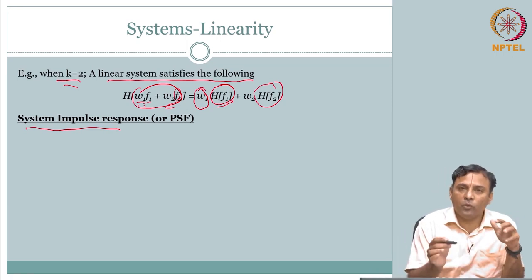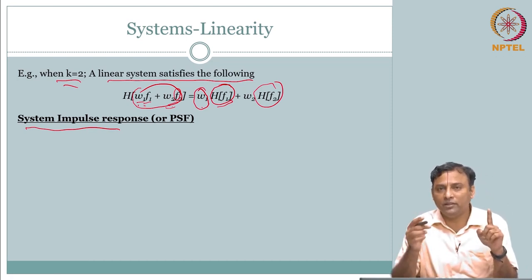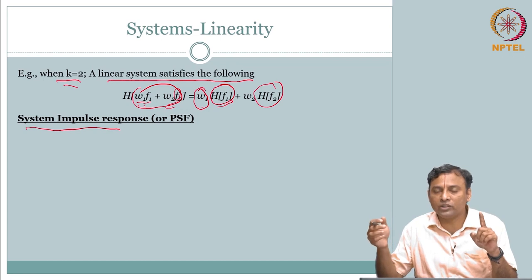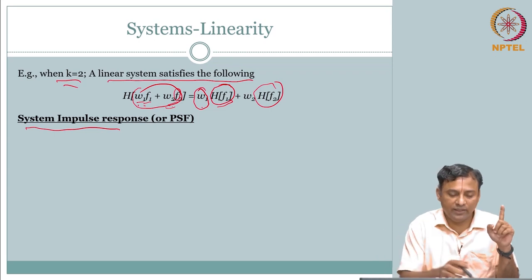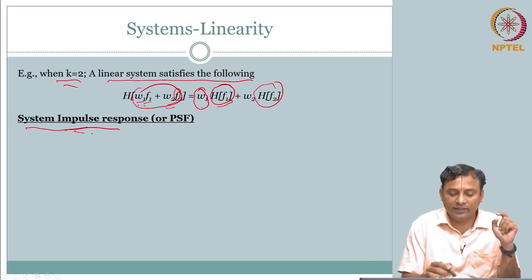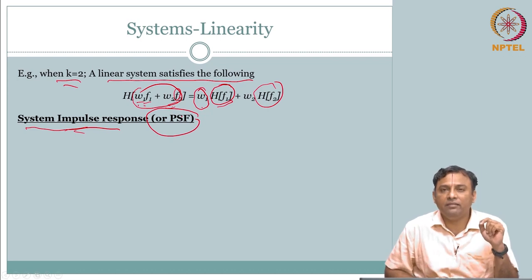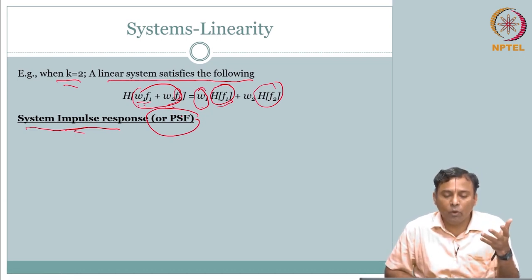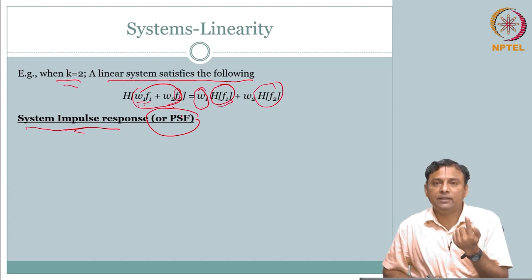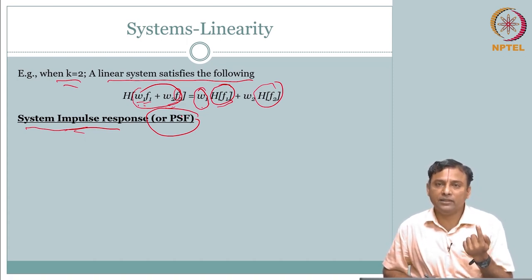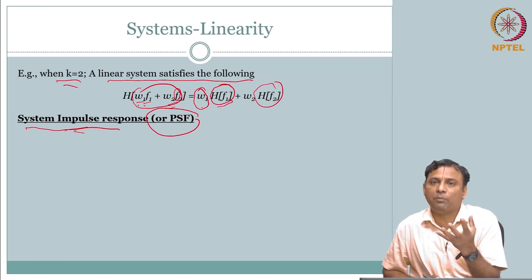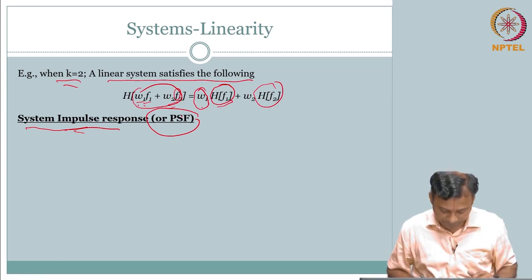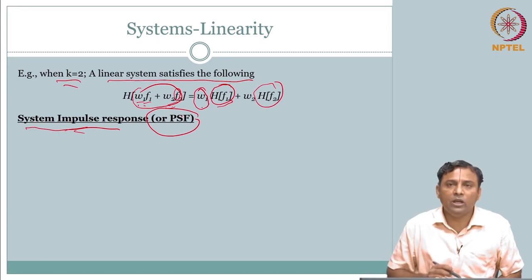What happens if you present that interesting signal - the point impulse - to the linear system? As you know from 1D, when you put the delta function as input, the output you get is called the system impulse response. Similarly here we call it the Point Spread Function, because we talked about point impulse - when it comes through the system, the point is spread. That is how the system responds to a point.